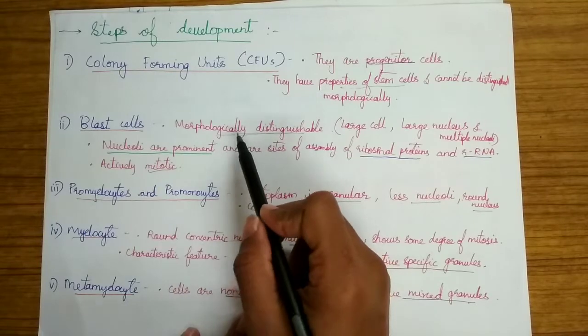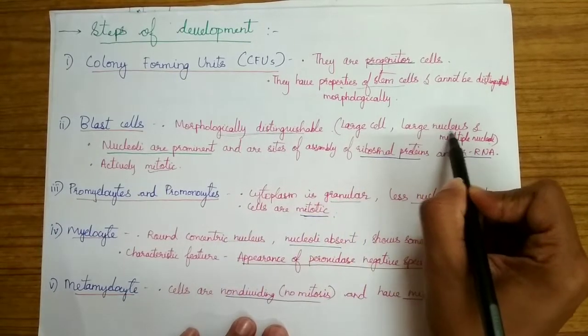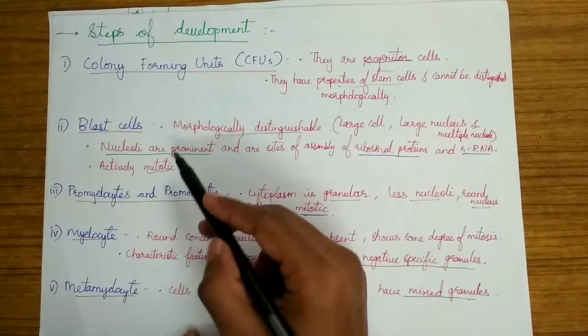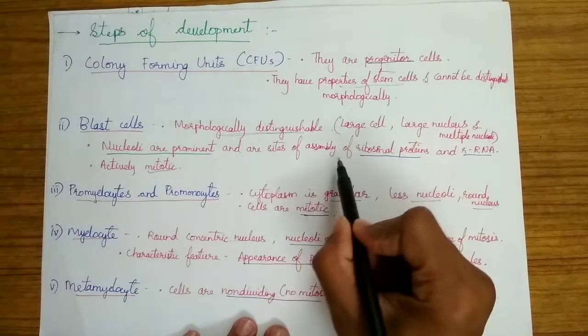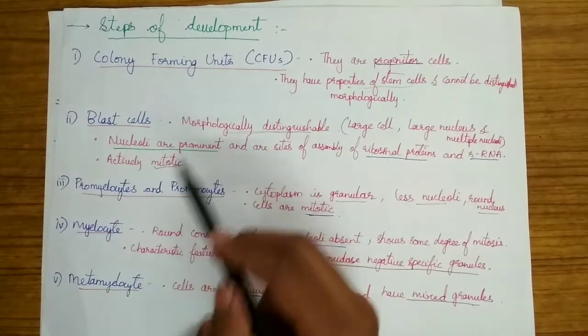Blast cells: they can be morphologically distinguished and they are large. The nucleus is also large and the nucleoli are multiple. The nucleoli are permanent and they are the main site of assembly of ribosomal proteins and rRNA. They are actively mitotic.